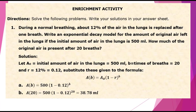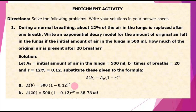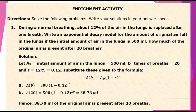Solution. Let A sub 0 equals the initial amount of air in the lungs, given as 500 ml. Let B equals the number of breaths equals 20, and R equals 12% equals 0.12. Substituting into the formula A(B) equals A sub 0 times the quantity 1 minus R, raised to B. For letter A, this is the model. Then A(20) equals 500 times the quantity 1 minus 0.12, raised to 20, equals 38.78 ml. Hence, 38.78 ml of the original air is present after 20 breaths.